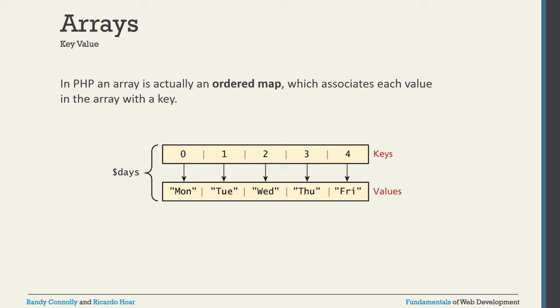Talking about the PHP array, it is like an ordered map, which associates each value of the array with a key. For example, Monday, Tuesday, Wednesday, Thursday, Friday are the values, and each value has an indexing key: Monday is 0, Tuesday is 1, Wednesday is 2, Thursday is 3, and Friday is 4. The variable name of this array could be called dollar-days, and this is the ordered map.